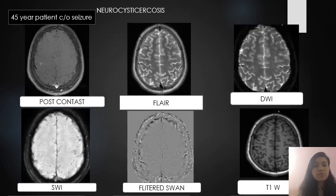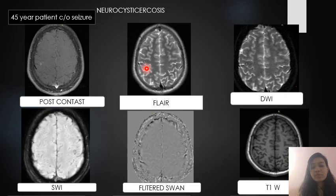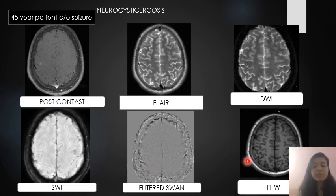The next patient is a 45-year-old with seizure showing an incomplete ring enhancing pattern in the right parietal region, with an eccentrically located scolex in FLAIR images, no restriction on DWI, mild blooming on SWI, and hypointense on T1-weighted images. It is showing multiple different stages. This is most likely a granulomatous lesion, likely neurocysticercosis.